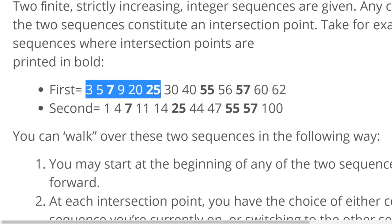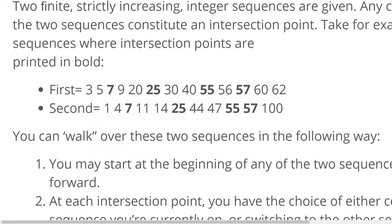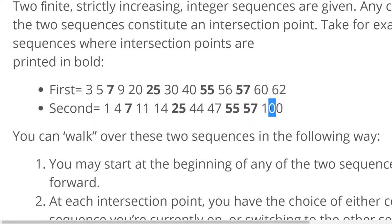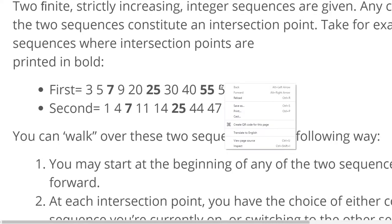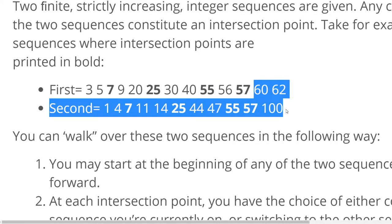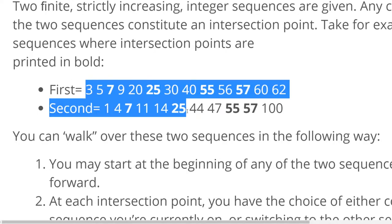So we're going to go 3, 5, 7, 9, 20, 25, then drop down here and do the 44, 47. Then we hit 55. And then we have our next common number — either a 57 or the 57s — so we can cross over or stay on the same path. If we stay on the same path, we have 100. Or if we cross over, we have 60 and 62. So the 60 and 62 would be 122, which is greater than 100. So the 55, we can cross over and get this 56, and then at 57 we stay on the same path. That's the logic of what's happening.